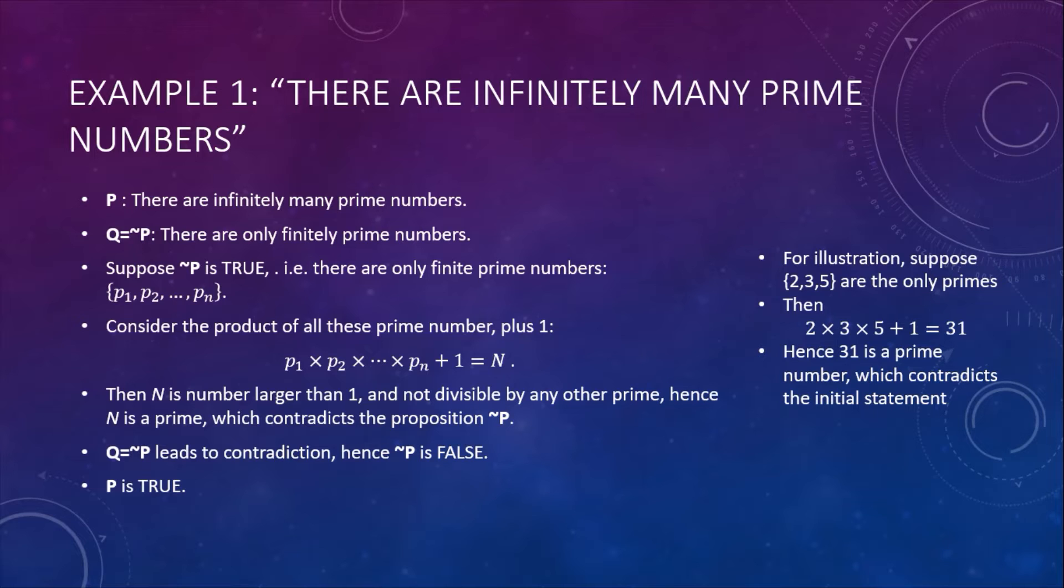So in our illustration, 2 × 3 × 5 + 1 = 31. In doing so, we have a number N which is larger than 1 but not divisible by any other primes. So by definition, N itself must be prime, which contradicts the proposition not-P.